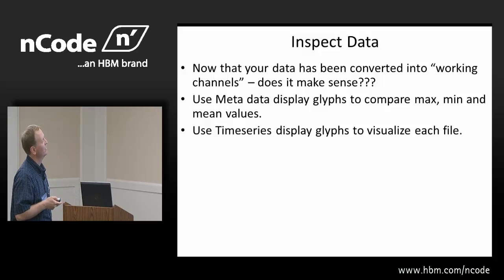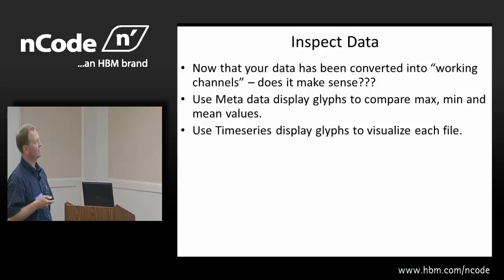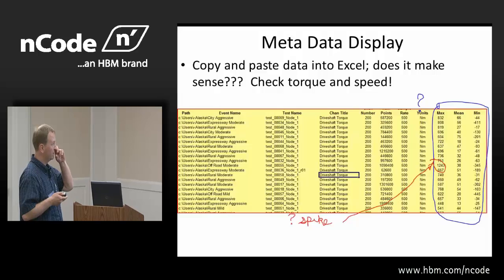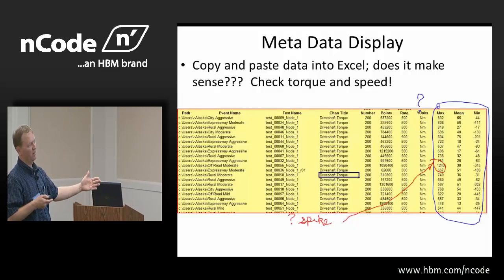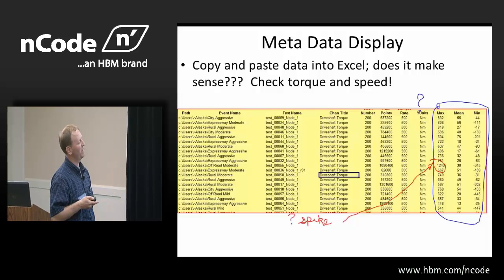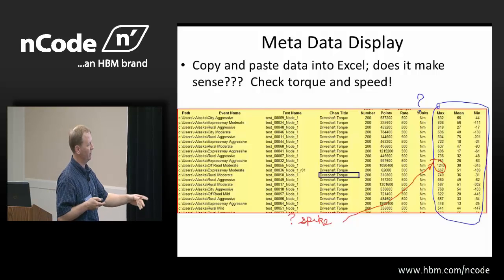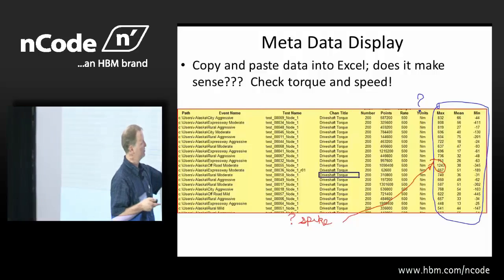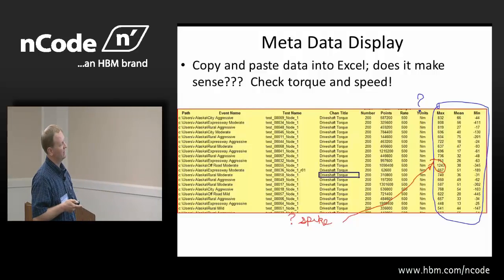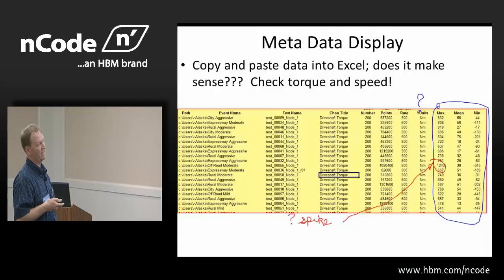Now that my data's been converted into working channels with my time series calculator, does it make sense? I use a metadata display glyph to compare min, max, and mean values, and then I use a time series display to visualize each file. Usually you're looking at 20 CIF files, but there could be 100 or 400. I do a metadata display and paste right into Excel. Right here I see a spike — we're only supposed to be commanding maybe 900 Newton meters of torque, and there I have a spike of 1240 Newton meters. So next, what am I going to do about that?